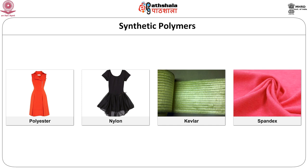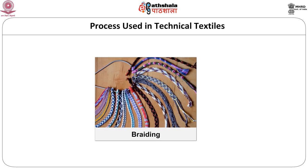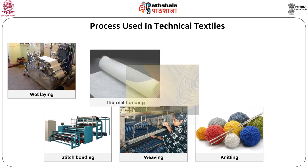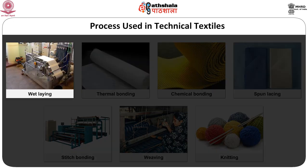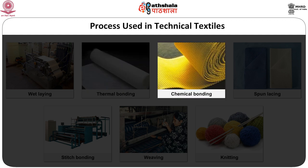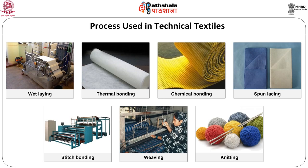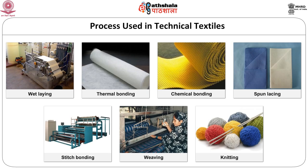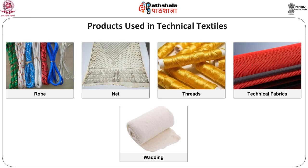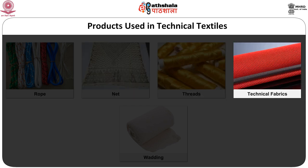Now we shall see the processes used in the production of technical textiles. Depending upon each type of fiber, the processes change. For metals, braiding technique is followed. In case of regenerated fibers, wet-laying, thermal bonding, chemical bonding, needle punching, spunlaying and stitch bonding are used. Weaving and knitting are two major sectors used for the production of technical textiles. The different technical products include ropes, nets, threads, technical fabrics and warding.